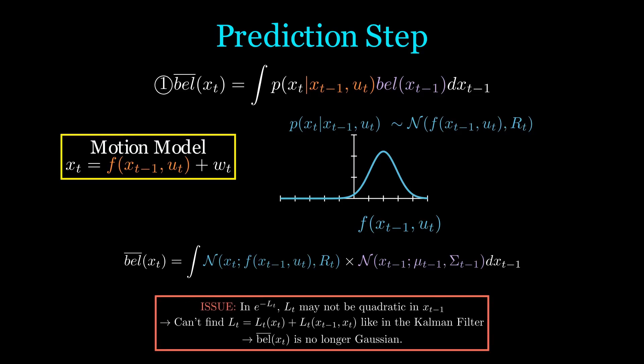Now we have the integral of two normal distributions that both depend on xt minus 1. But now, unlike in the Kalman filter, we have an issue. The mean of the first Gaussian may not be linear in xt minus 1, which means that Lt may not be quadratic. Hence, we can't find a nice decomposition, which means we may not have a resulting Gaussian distribution.